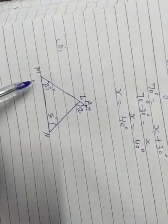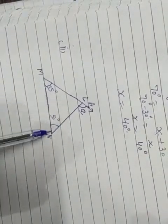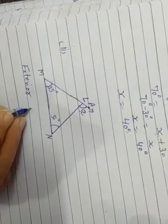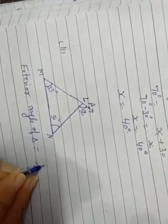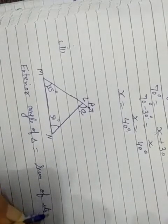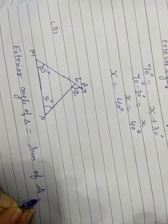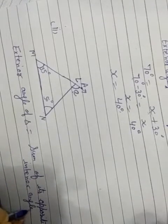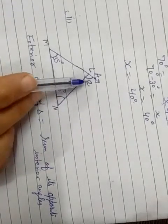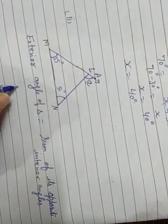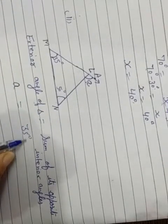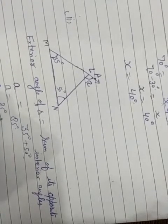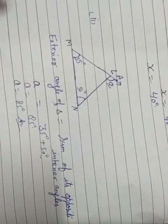The second part: angle A is the exterior angle and its opposite interior angles are M and N. Using exterior angle of triangle equals sum of its opposite interior angles, we get: A equals 35 degrees plus 50 degrees. A is equal to 85 degrees. So our answer is A equals 85 degrees.